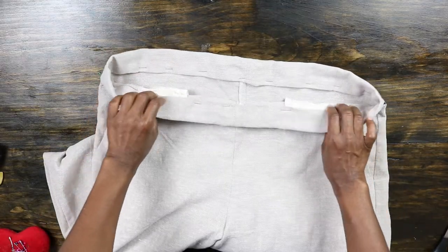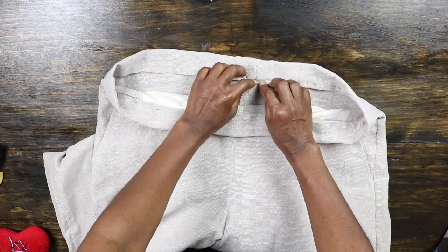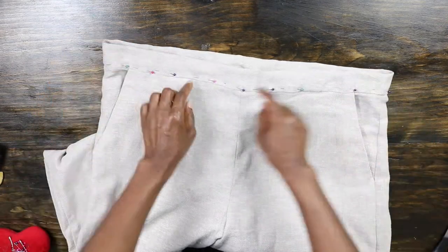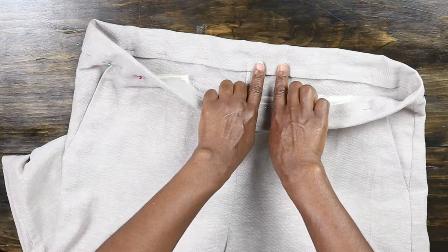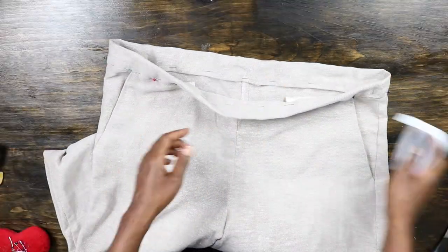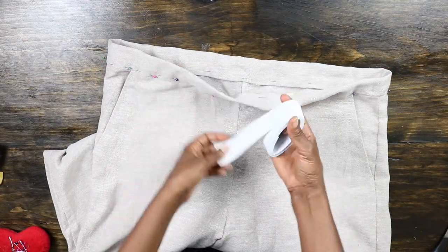And as you may already know, to insert an elastic band we need to leave some opening for inserting the elastic and I'll be leaving about an inch. I go ahead to stitch the band closed using the stitch in the ditch method.